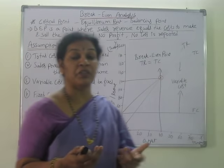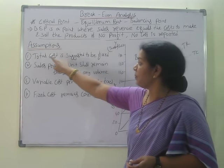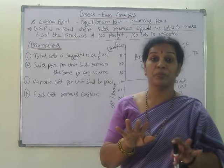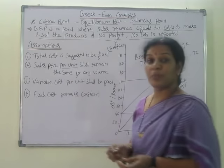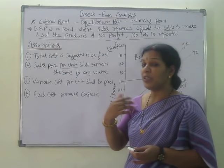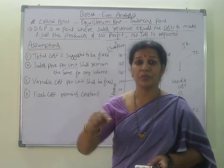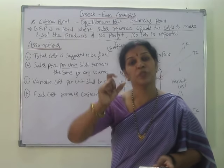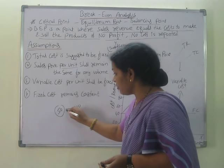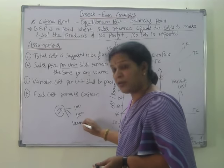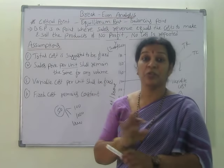What are the assumptions of breakeven analysis? There are four simple assumptions. First, total cost is assumed to be fixed — there should not be any changes. Second, sales price per unit shall remain the same for any volume. Suppose the sales price per unit is 50 rupees — whether you manufacture 100, 1000, or one lakh products, the sales price per unit of 50 rupees must always be consistent and should not change.